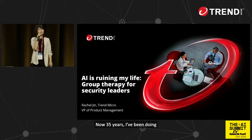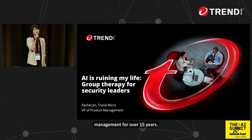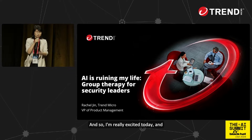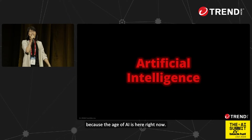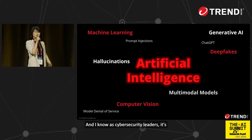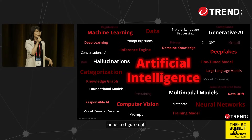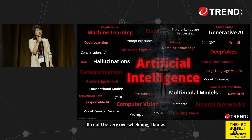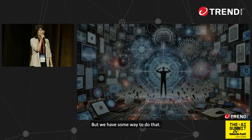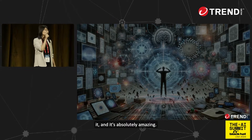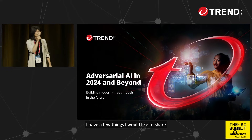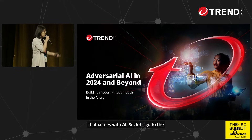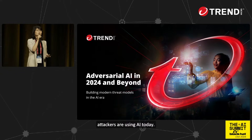Hello everyone, my name is Rachel Jin. I've been doing cybersecurity product management for over 15 years. I'm based in Dallas, Texas — thank you for having me and thank you for the introduction by Eva. I'm really excited today because the age of AI is here right now, and as cybersecurity leaders it's on us to figure out the complexity that comes with artificial intelligence. Let's go to the attacker's world first and see how attackers are using AI today.